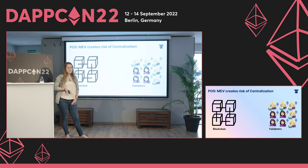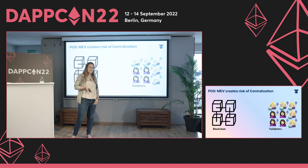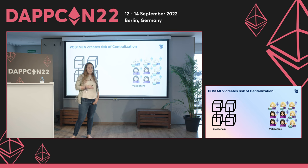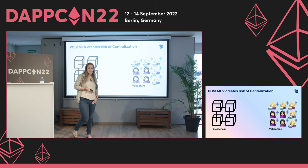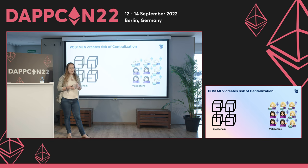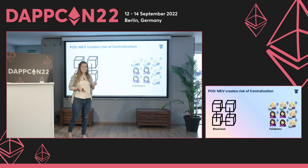They take over a larger share of the network, which is obviously not great. This is a decentralization risk, because validators are the ones who can censor transactions. They can specifically decide what transactions are going to be part of the next block and decide on excluding some if they want to.